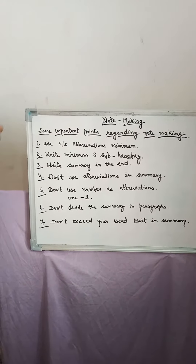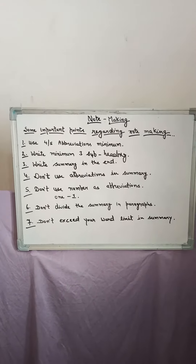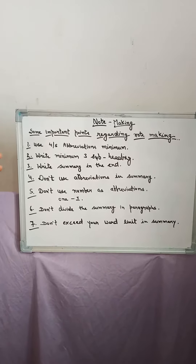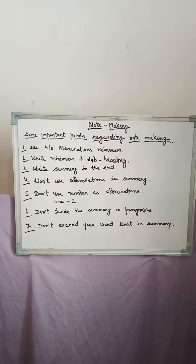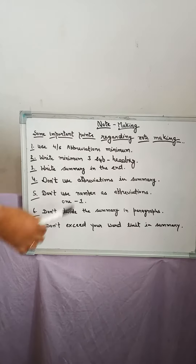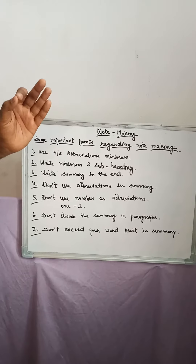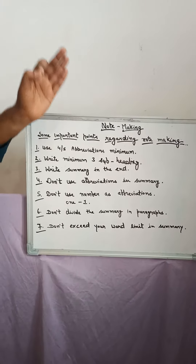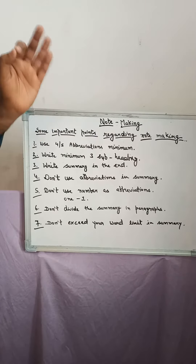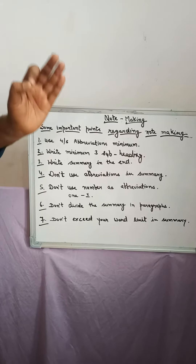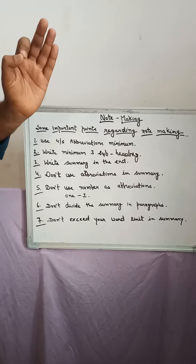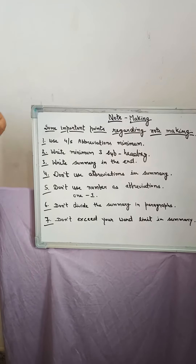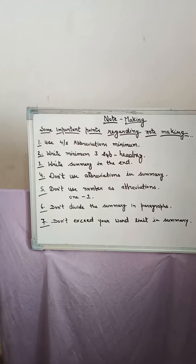Third point: write summary at the end. You should follow the pattern of notemaking. First, give an appropriate title. Second, make notes. Third, used abbreviations should be put into a box. And in the last, write down the summary.